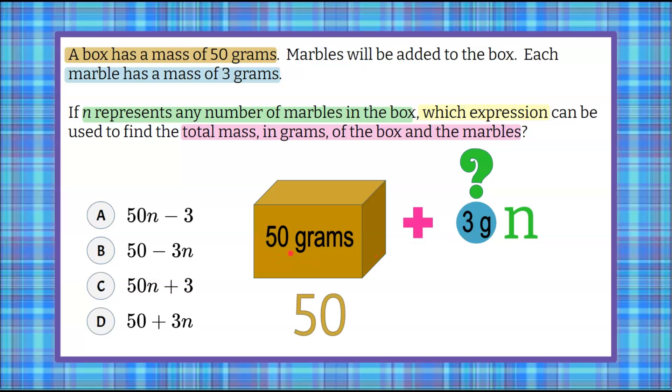So we're going to take our 50. We don't need the grams because it's just a number 50. And we're going to add to it 3 times the number of marbles. We don't know. Again, this is an unknown number. It could vary.